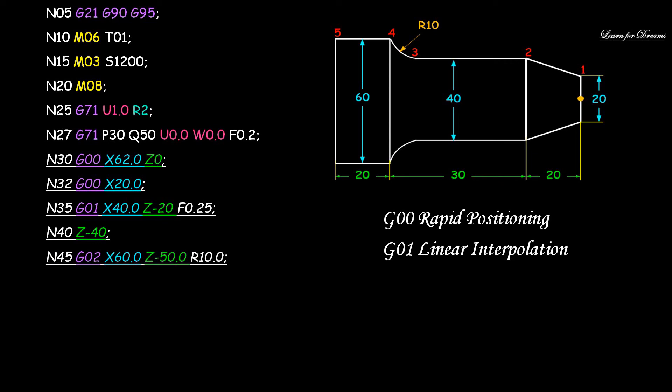Now N45 G02 X60 Z minus 50 R10. Here from point 3 X40 to point 4, circular interpolation. This entire term, so G02 is circular interpolation in clockwise direction. Point 4 coordinates are X60, Z minus 50, and radius is 10.